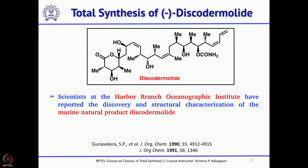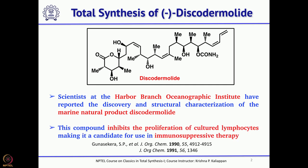Good morning and welcome back to the NPTEL lecture series on Classics in Total Synthesis. Today we will talk about another very interesting and complex natural product called Discodermolide. It is a marine natural product and it shows really excellent biological activity — particularly it is an anti-cancer agent and also it could be used as an immunosuppressant.